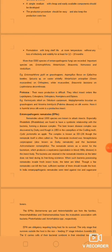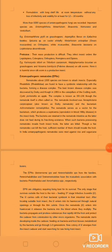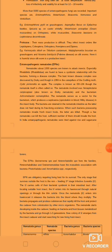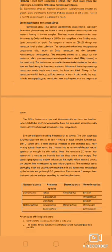Then entomopathogenic nematodes, short form EPN. Nematodes — above 1000 species — are known to attack insects. Especially raptured insects are found to have a symbiotic relationship with bacteria, forming a disease complex. The best known disease complex was discovered by Dutky and Hough in 1955, in the caterpillar of the codling moth, Cydia pomonella, on apple.